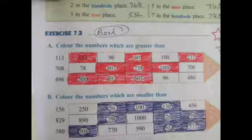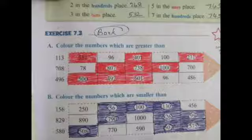Exercise 7.3: The first activity is to color the number which is greater than the given number. The given number is 113. Compare 351, 96, 401, and 231 with 113. Numbers greater than 113 are 351 and 401, so color those. Also color 231 as it is greater than 113.